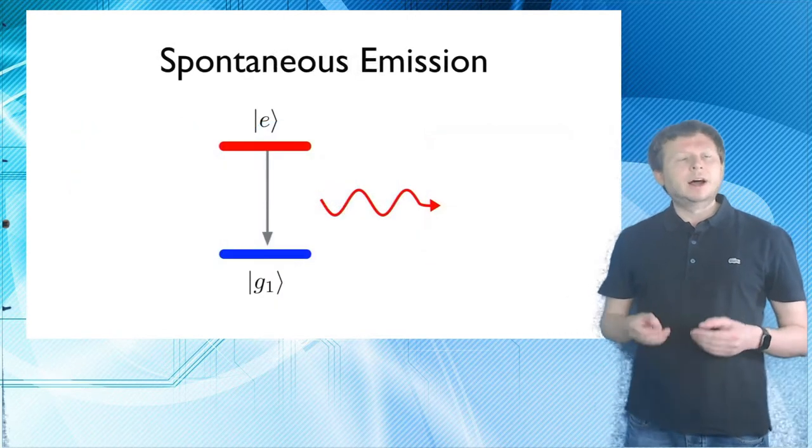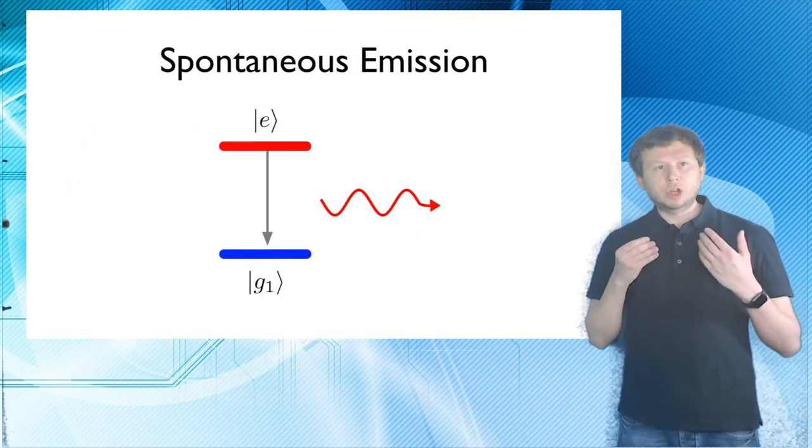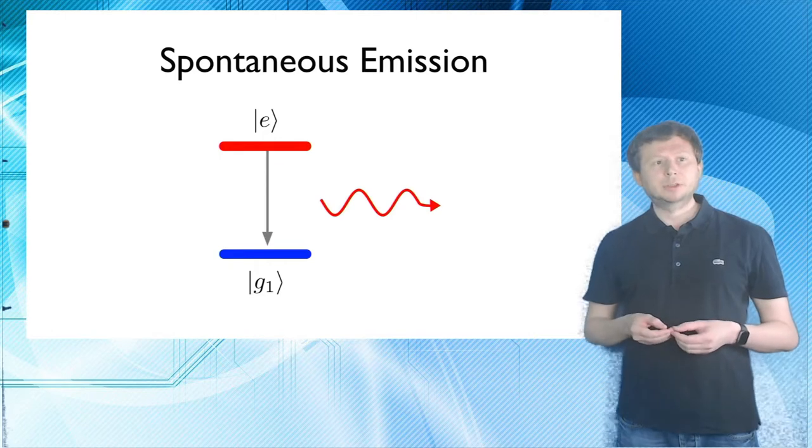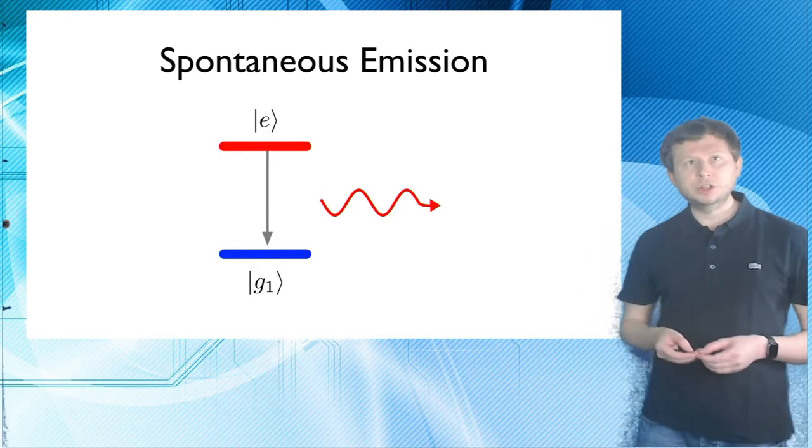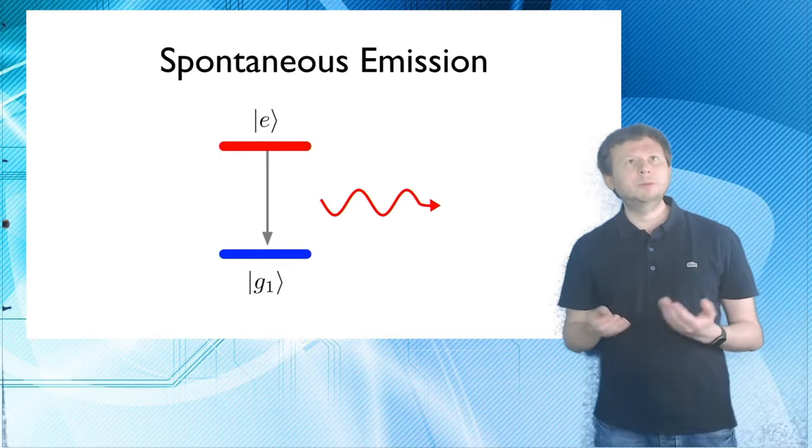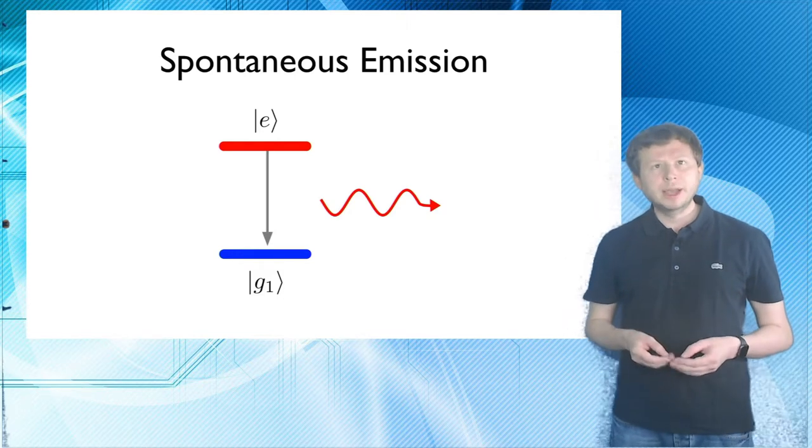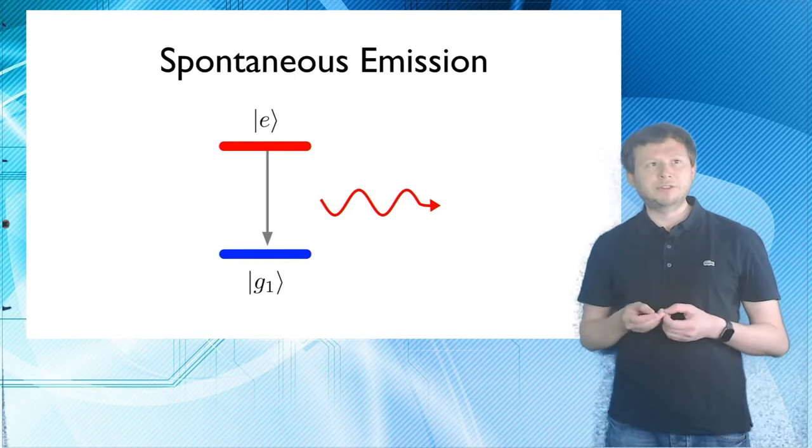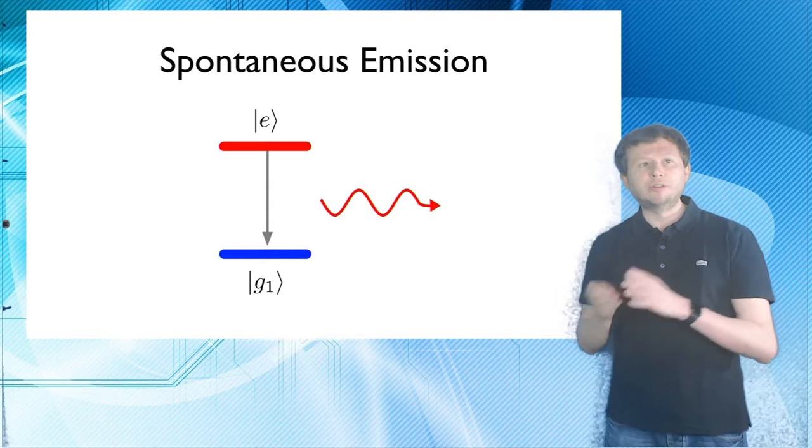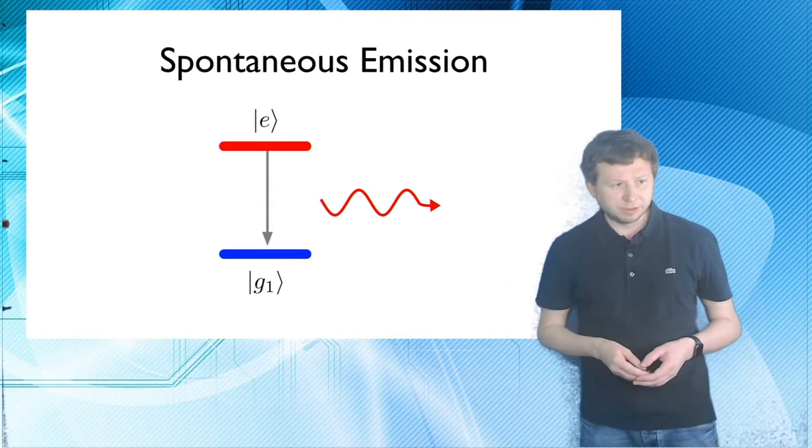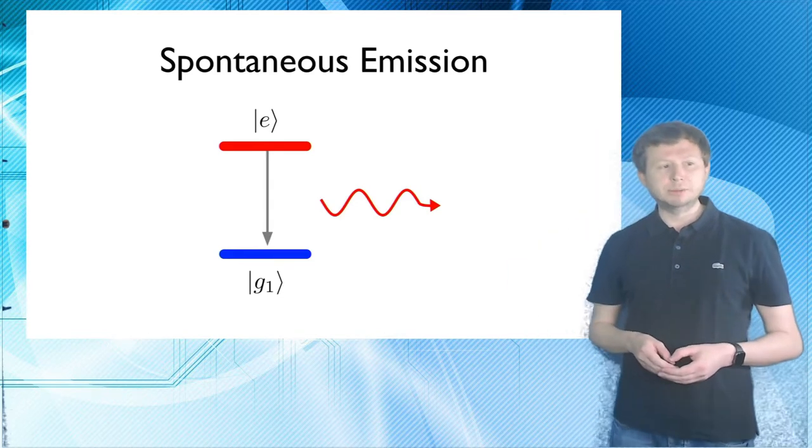As I said, subradiance is collective spontaneous emission, a phenomenon that occurs when several quantum emitters are in close vicinity to each other and you have destructive interference between the emitted light of the individual emitters. So I would like to start with a brief recap of spontaneous emission.